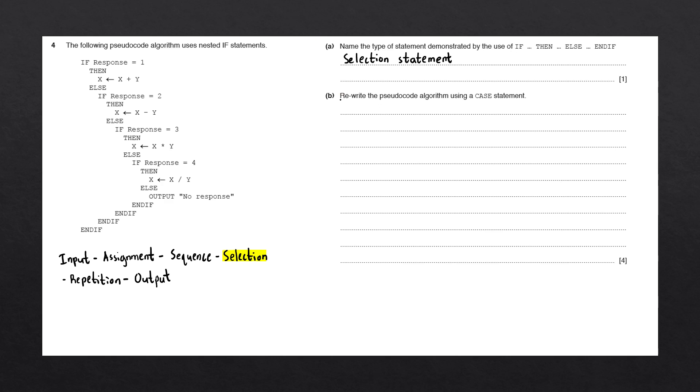Question B says, rewrite the pseudocode algorithm using a case statement. Case statements are used when we're testing a single variable against multiple different values. If we take a look at this nested if statement, we notice that for every if statement condition, we're testing the same variable against a different value.